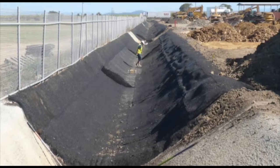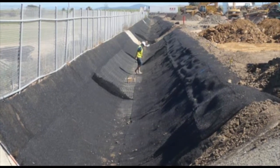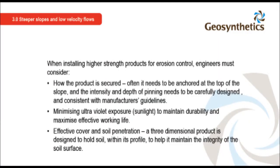The three-dimensional products are flexible and can be used in other applications, including being coated with concrete in irrigation channels. When installing higher strength products for erosion control, engineers must consider how the product is secured. Often, it needs to be anchored at the top of the slope and the intensity and depth of pinning needs to be carefully designed and consistent with manufacturer's guidelines. Minimizing ultraviolet exposure to sunlight is important to maintain durability and maximize effective working life. Effective cover and soil penetration are also critical. A three-dimensional product is designed to hold soil within its profile to help maintain the integrity of the soil surface.